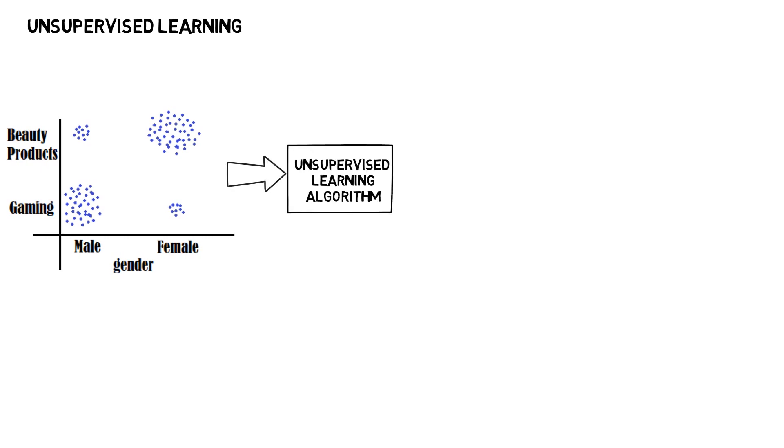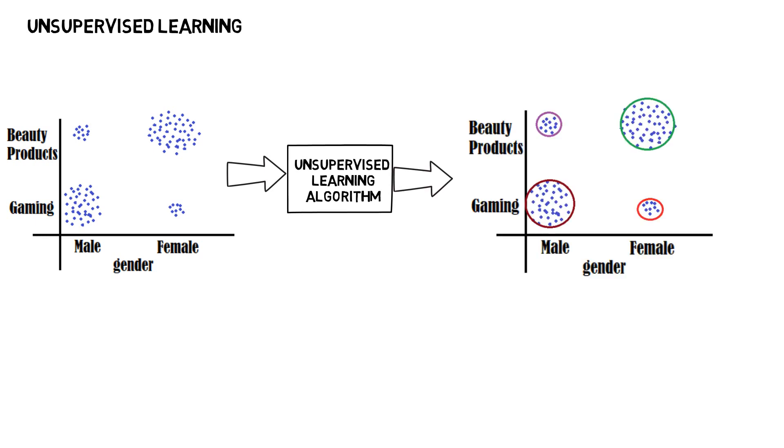Basically when we feed this data to an unsupervised learning algorithm, the algorithm will simply find this pattern and output four clusters from this data and also give some random names to these clusters like cluster 1, cluster 2, cluster 3, and cluster 4.